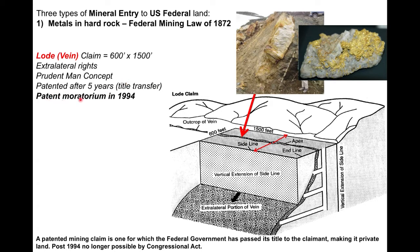A moratorium was put on that patent process in 1994, because over more than a hundred years people were abusing the system — filing a claim, not mining on the land, filing a patent, with the clear goal of simply gaining ownership of the land. So in 1994, the U.S. Congress put a moratorium on patents and you're no longer allowed to apply for them.